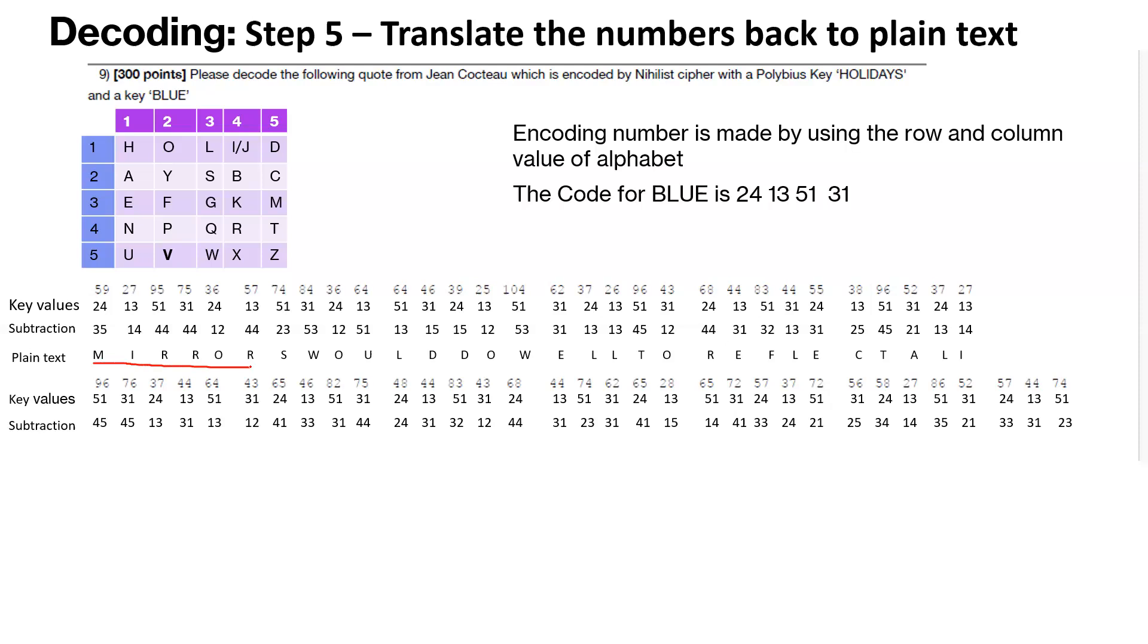We are getting some kind of a word out here. This seems like mirror or mirrors. This looks like word. This looks like do. Mirrors would do well too. So you see that there are words emerging from the whole set. So similarly, we go ahead and convert to plain text each of these numerical values and see what we get.